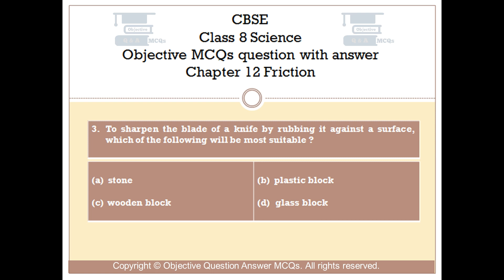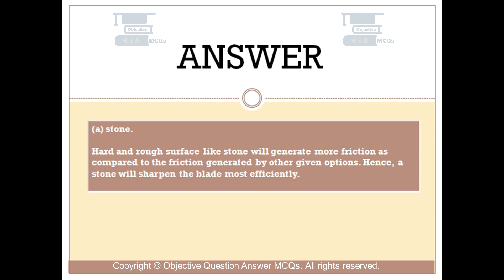The right answer is Option A: Stone. A hard and rough surface like stone will generate more friction as compared to the friction generated by other given options. Hence, a stone will sharpen the blade most efficiently.